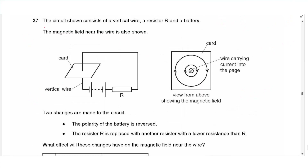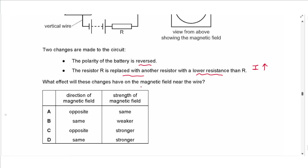Question 37: A circuit has a vertical wire, resistor R, and battery. Two changes: the battery polarity is reversed and R is replaced with a lower-resistance resistor (increasing current). Reversing the battery reverses the direction of the magnetic field, and increasing the current makes the field stronger. The answer is C.